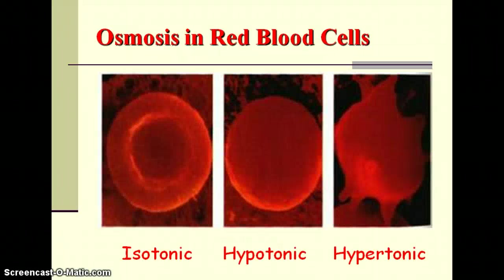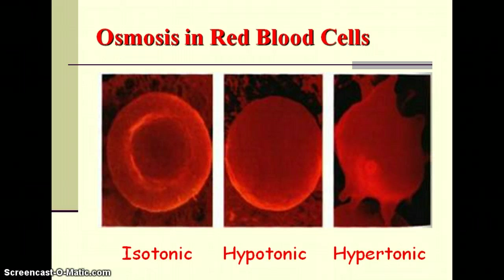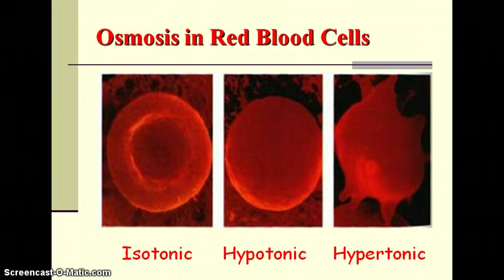A key part of osmosis is that we're just talking about water crossing the membrane. There are still other particles involved, but those particles are too large to cross the membrane, so they can never reach equilibrium — they're stuck inside or outside the cell. Instead, water will cross the membrane to try to even out concentration levels. It's as if you had high-concentration Kool-Aid on one side of a membrane and low-concentration Kool-Aid on the other. The Kool-Aid itself can't cross because it's too large, but water passes through, trying to equal out the concentration on both sides.